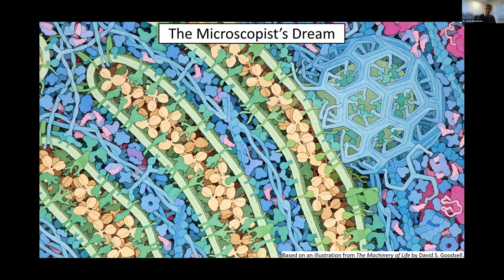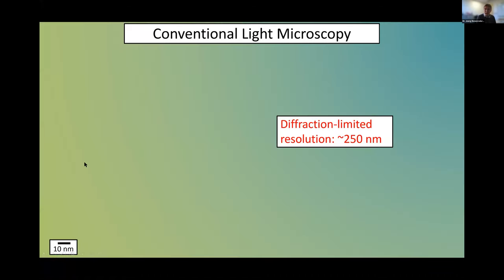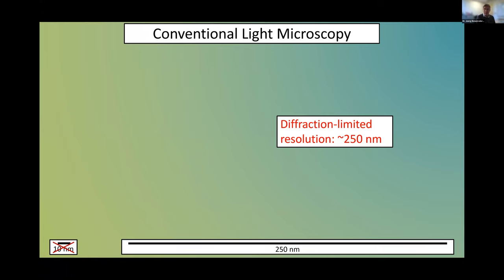The first problem is this tiny scale bar, which is in violation of the diffraction limit of light microscopy — 250 nanometers and not 10 nanometers. The structure I just showed you would really be blurred at this size scale of about 250 nanometers if you tried to image it.